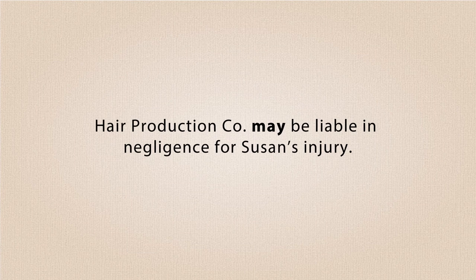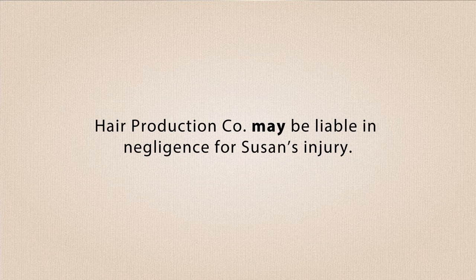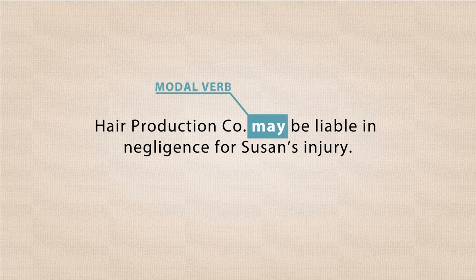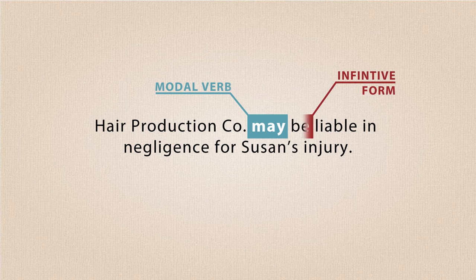A second way to introduce an issue is to use a tentative opinion, using the modal verb 'may' or 'might', like this: 'Hair production company may be liable in negligence for Susan's injury.' Here, the issue is not explicitly signaled. Instead, it is implicitly raised when the tentative opinion is provided. Note the usage of the modal verb 'may' — modal verbs like 'may' are always followed by the base form or infinitive form of the verb. For example, 'may be'.